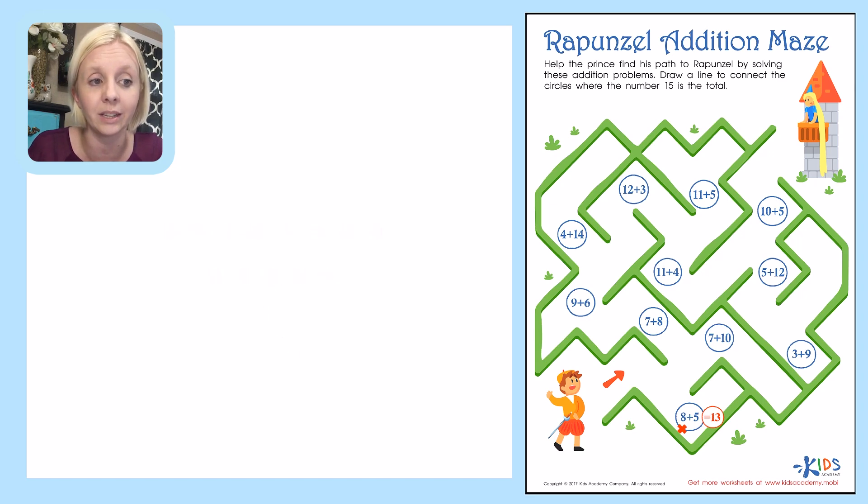The next one says 7 plus 10, and I already remember that whenever I add a number on to 10 I can just count up from 10. So I'm going to go ahead and start and I'm just going to count up. So it's 10, 11, 12, 13, 14, 15, 16, 17. So that's not the correct answer either. That's 17 and we're trying to get to 15 is what that says up here.